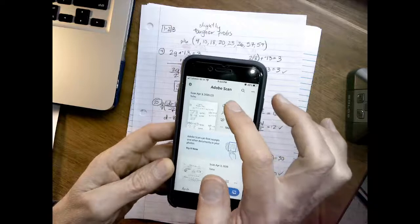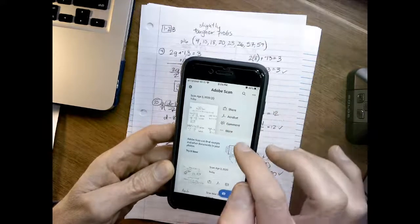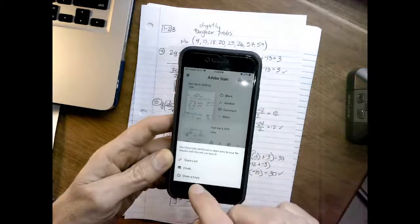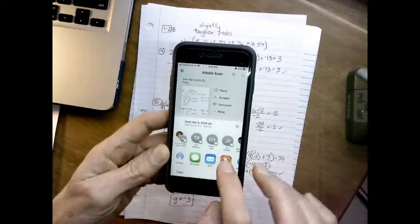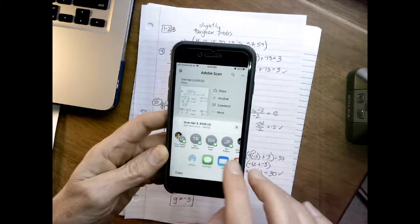The main option here I think that you want to use is share. So the document is there. Click share, share a copy, and here's where you're going to navigate your way to Schoology. My apps don't show Schoology.